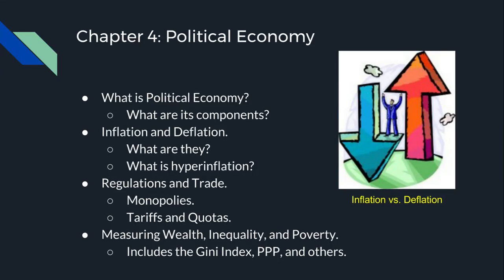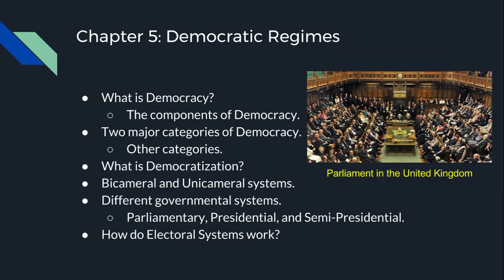Chapter 5 talks about democratic regimes. So what is democracy? Democracy is rule by the people — there is representation in government, elections are not rigged, the people are heard, a free market economy exists, and there is also impeachment power. There are two major categories of democracy: liberal and illiberal democracy.